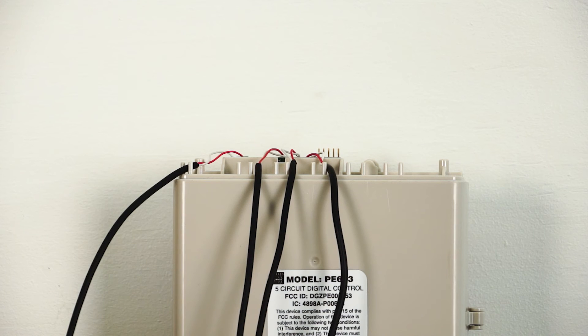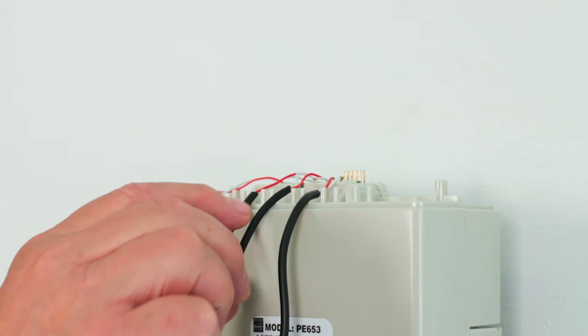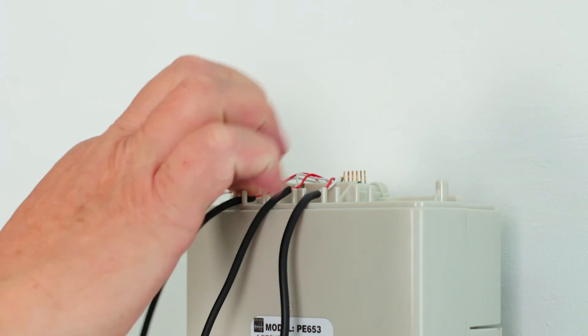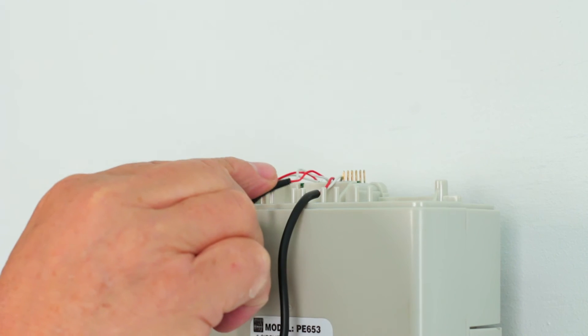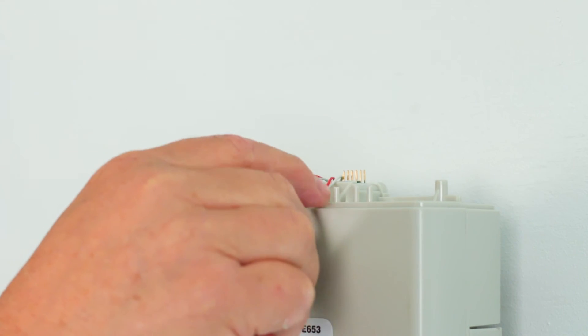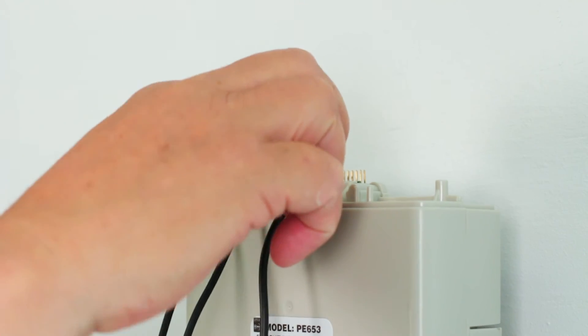When all the sensors are connected, route the wires out through the guides located on the back of the receiver. Make sure they're held in place within the guides. Otherwise, the wires may interfere with the connection of the antenna and affect communications between the remote and the receiver.